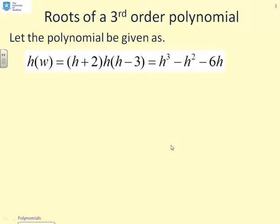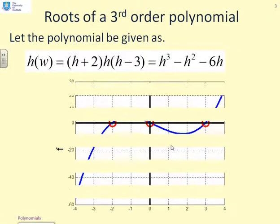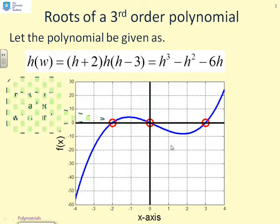Here's an example to get you started. Let the polynomial be given as h(w) = (h+2)h(h-3), and you could write that out or expand it to give h³ - h² - 6h. Now clearly, you can see there are three factors here, and there are three roots.